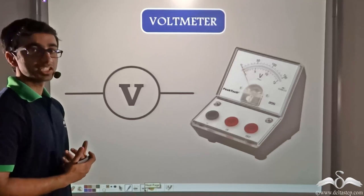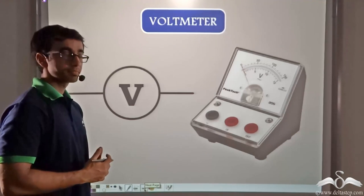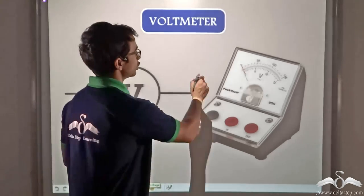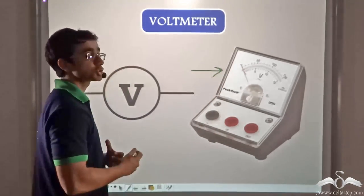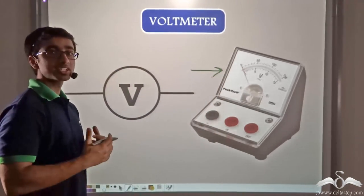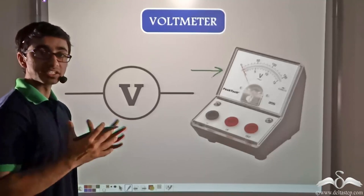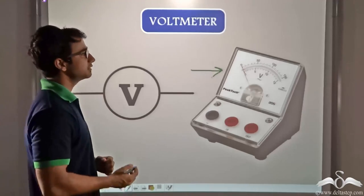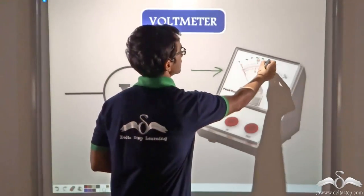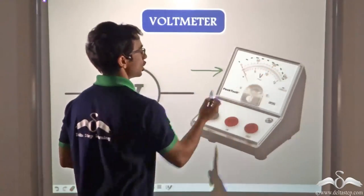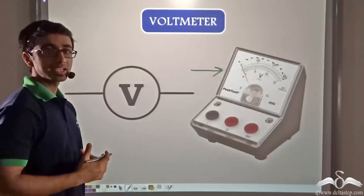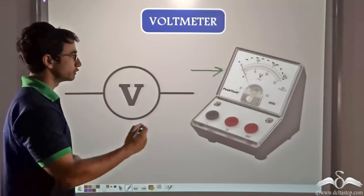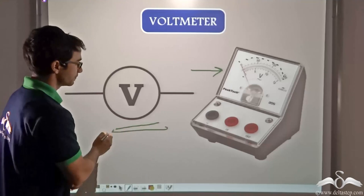Just as we can measure current, we can also measure voltage. A voltmeter is used to measure the voltage or potential difference between any two points in a given circuit. From the readings on the voltmeter we can read the value of voltage, and in a circuit the voltmeter is depicted by the letter V symbol.